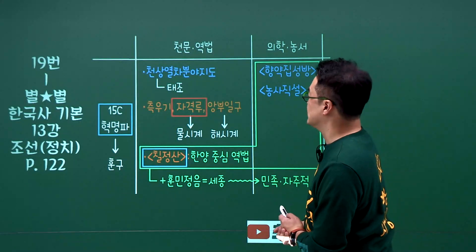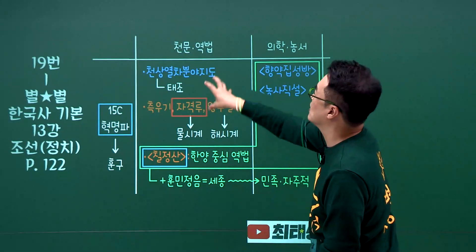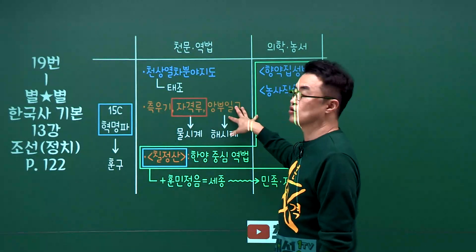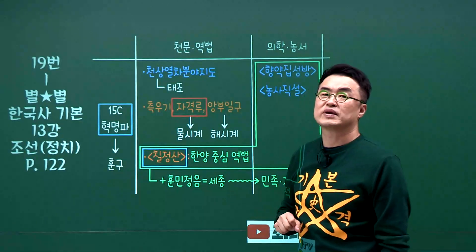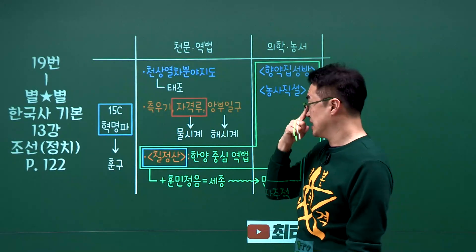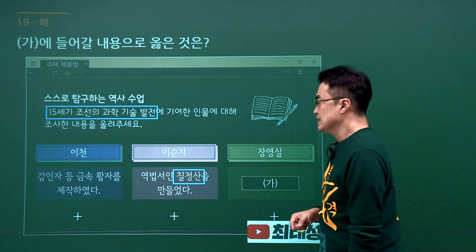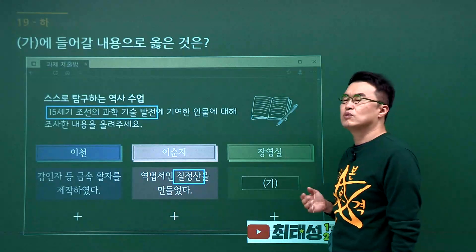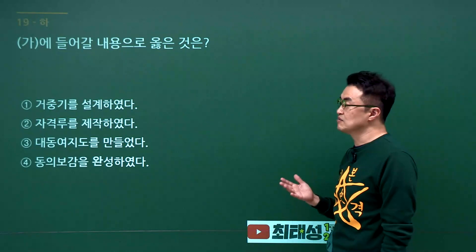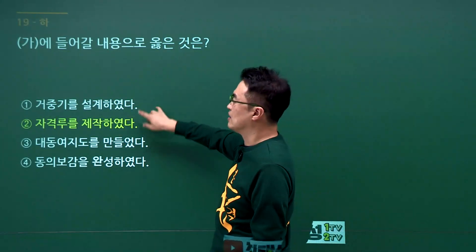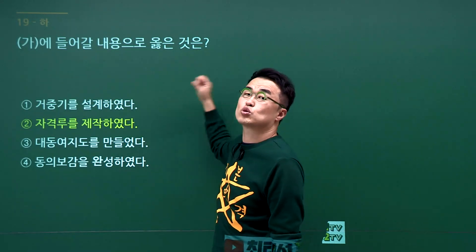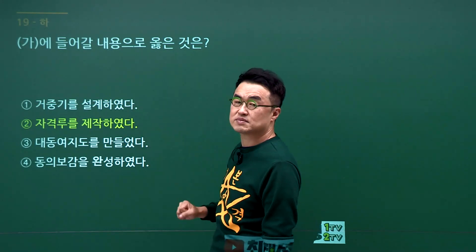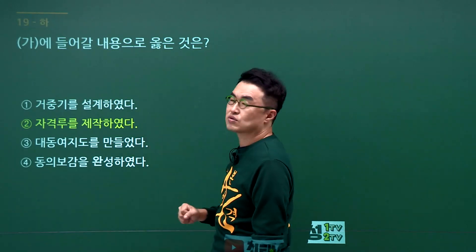조선 세종 때 과학기술 문제입니다. 세종 때 측우기, 자격루, 앙부일구 같은 발명품을 만들었던 인물이 장영실입니다. 이천이 갑인자를 만들었고, 이순지의 칠정산도 있습니다. 15세기 조선 과학기술 발전으로 자격루가 있습니다. 거중기, 대동여지도, 동의보감은 모두 조선 후기이므로 제외하면 2번만 남습니다. 장영실을 몰라도 15세기 것은 이것밖에 없으므로 2번을 고르시면 됩니다.